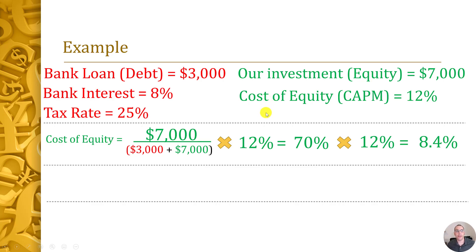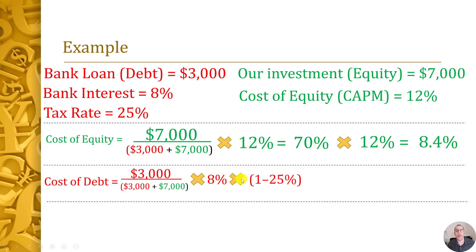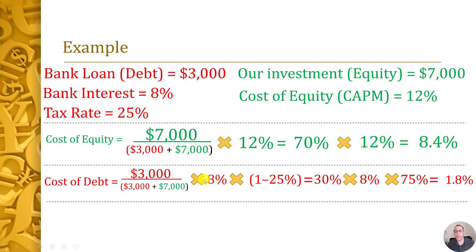The weight of debt is $3,000 over $10,000, which is 30%. We multiply that by the 8% interest rate, then by (1 − 25% tax rate) = 75%, because interest payments on debt are tax deductible. That gives us 30% × 8% × 75% = 1.8%. So our weighted cost of debt is 1.8%. If our company were 100% debt-funded, the WACC would be 8% × 75% = 6%.